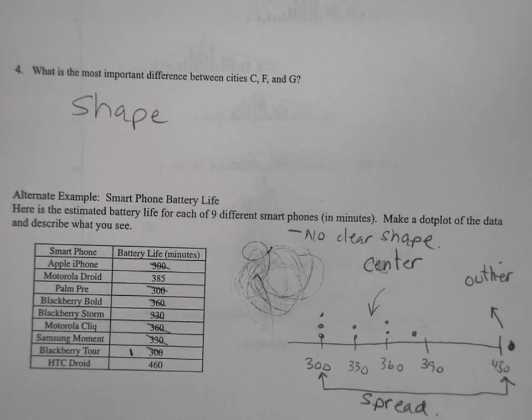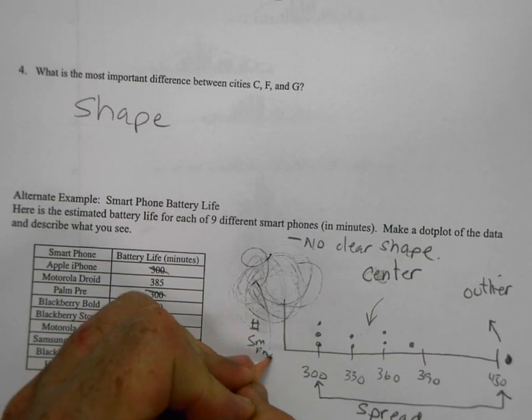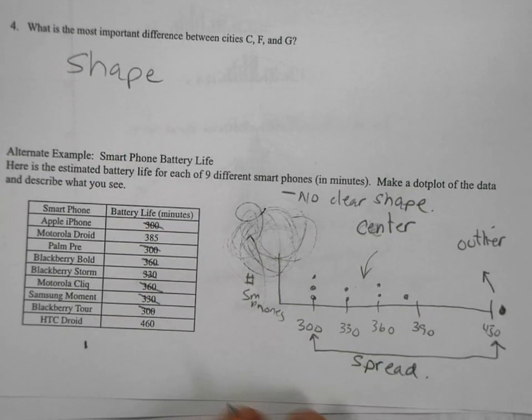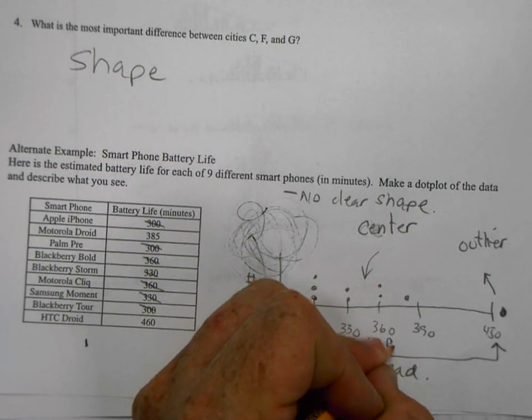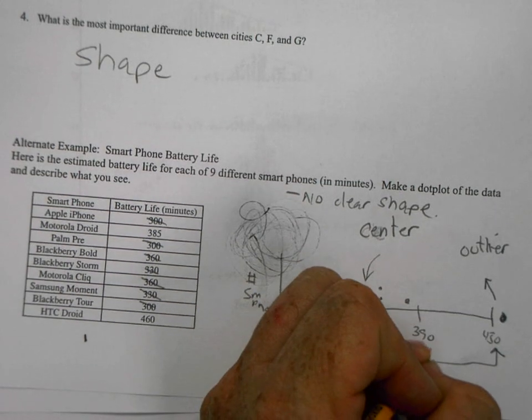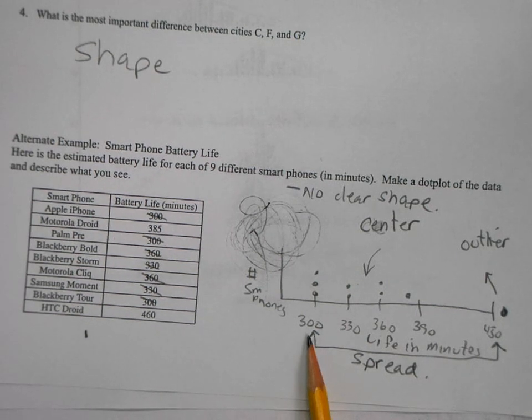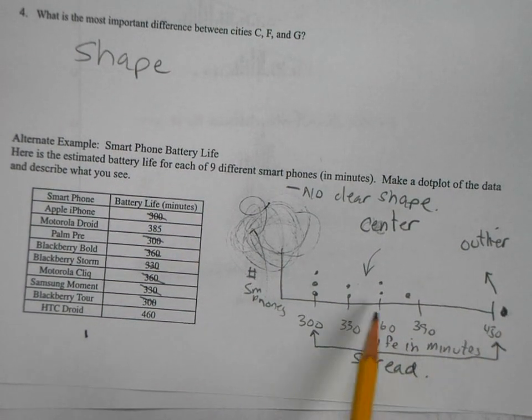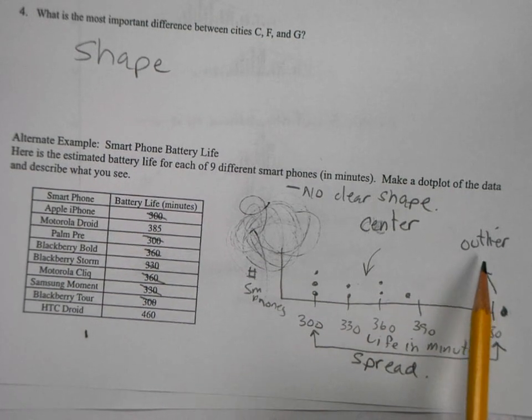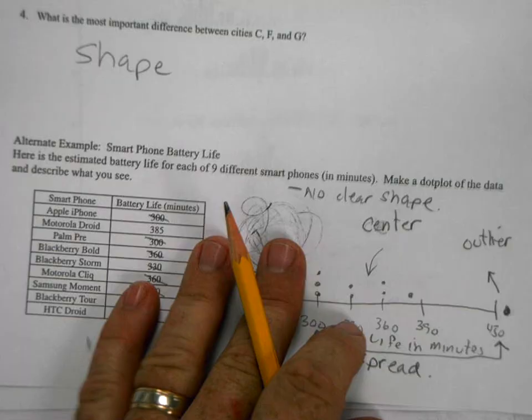So that's a quick dot plot. I would have labeled this, but smartphone, smartphones. It would be like the number of smartphones. Sorry for the small handwriting, my hand slipped. Number of smartphones. This would be the battery life in minutes. So this is life in minutes. And so there's my spread. So you'd be talking about the spread between 300 and 460 over here. The center is right about here and there somewhere. Outlier, this is definitely possibly an outlier for the HTC Droid.